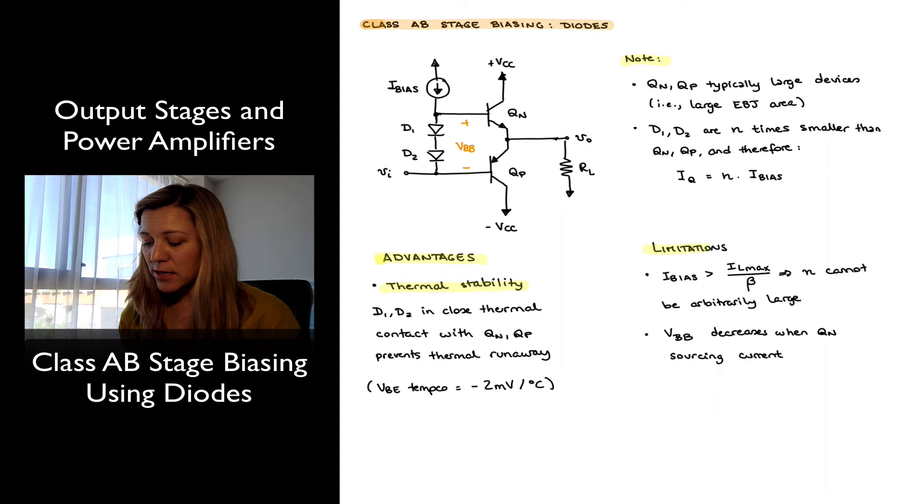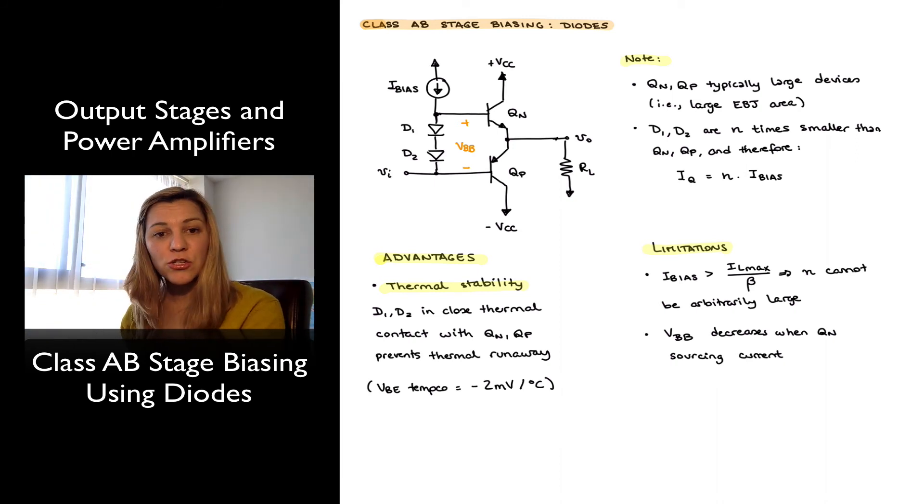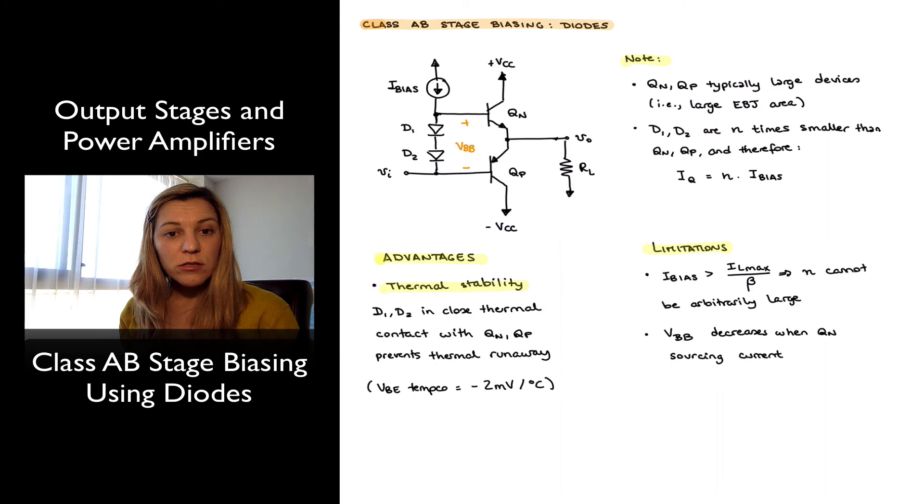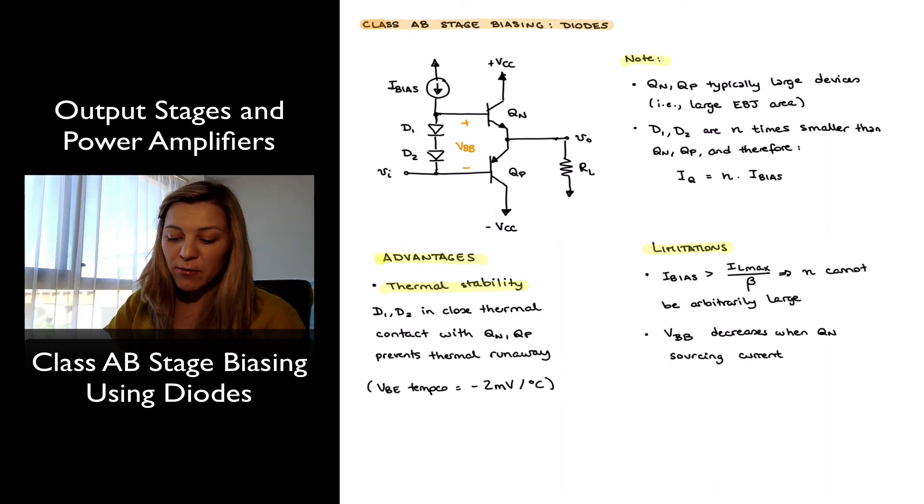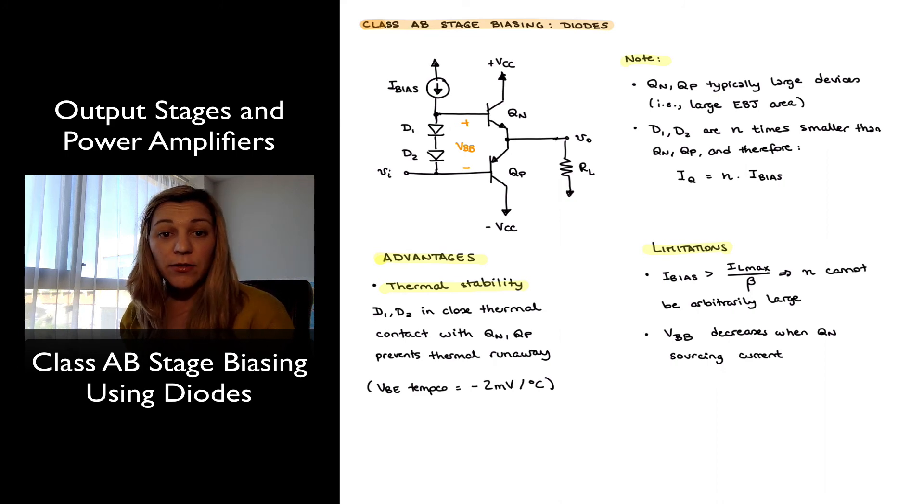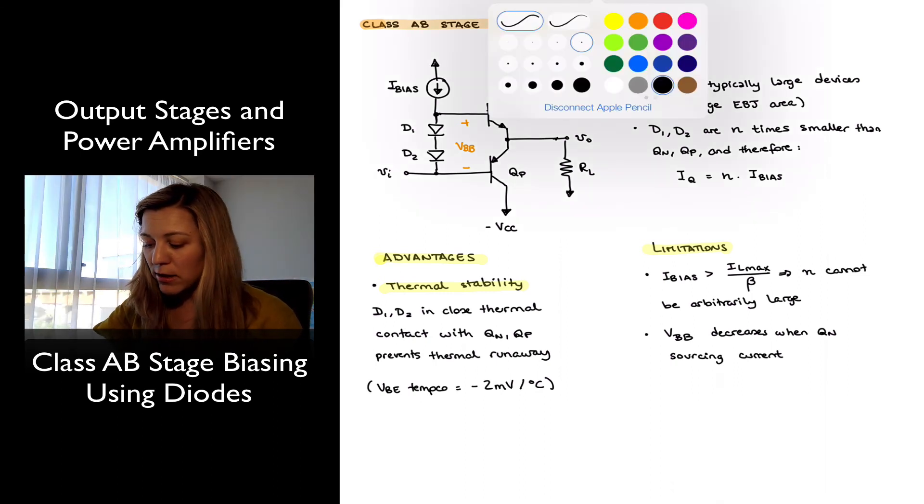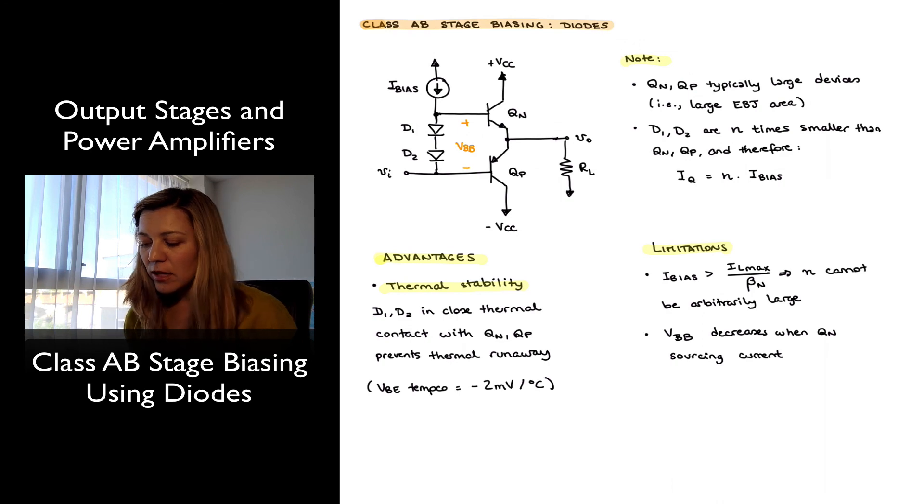There are some limitations associated with the circuit. The main limitation would be that as my collector current increases, when my transistor Qn is sourcing current to the load, I'm going to need to push more base current into the output transistor Qn, and that base current is coming from that bias current source, and therefore I-bias needs to be greater than the maximum load current divided by the beta of transistor Qn.